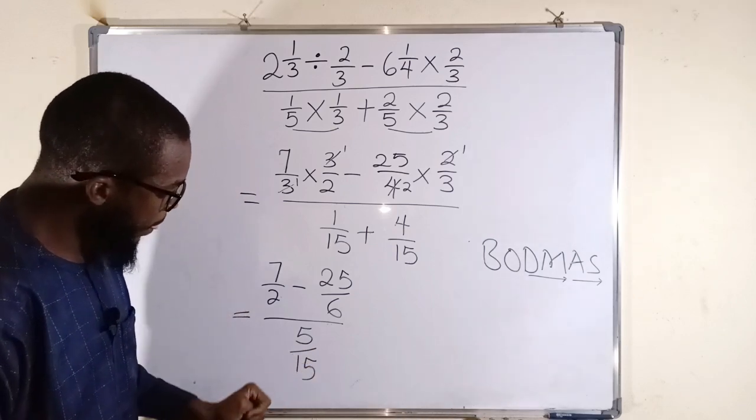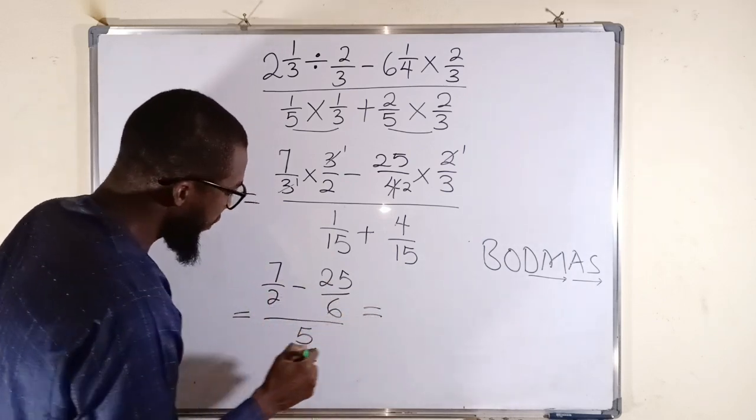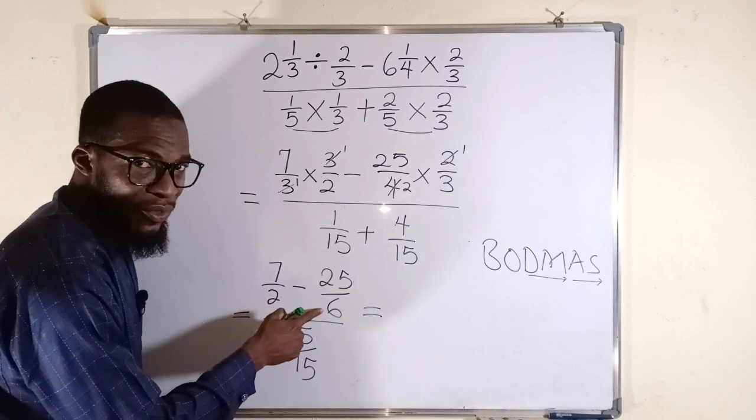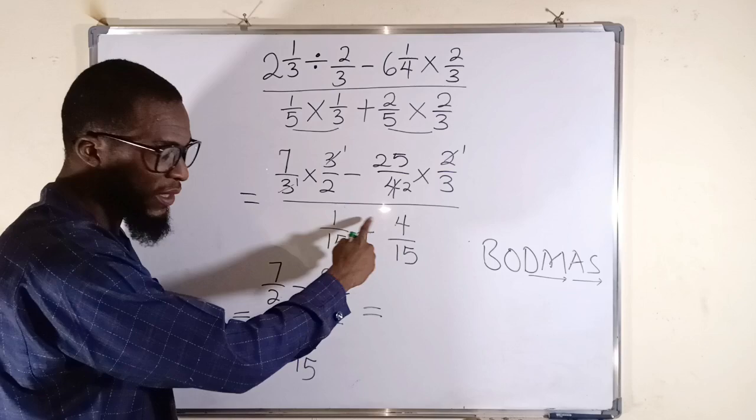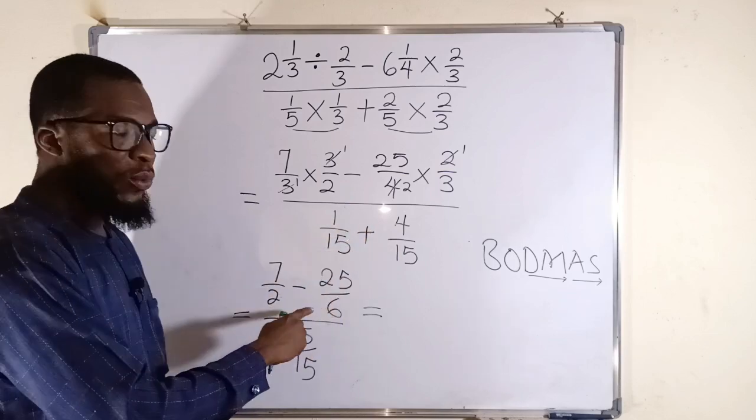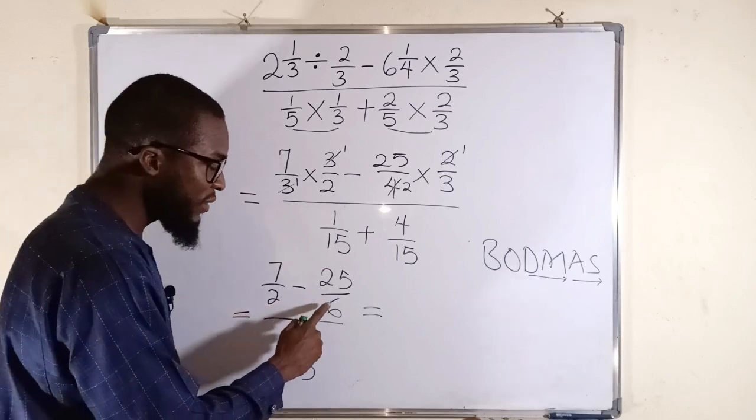All right, again, we want to simplify the top first. But this is 2, this is 6. We want a situation where they will have a common denominator just like this. The LCM between 6 and 2 is 6. Therefore, we are going to transform 2 and 6 into 6.